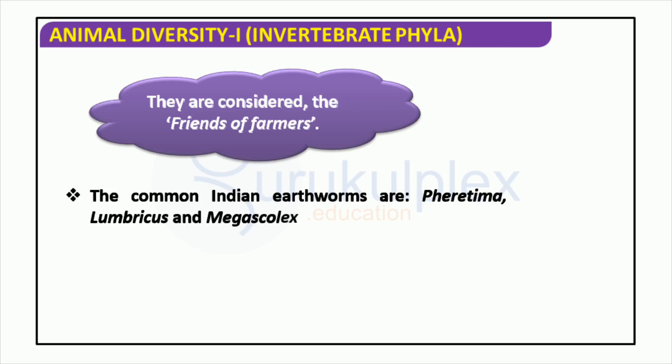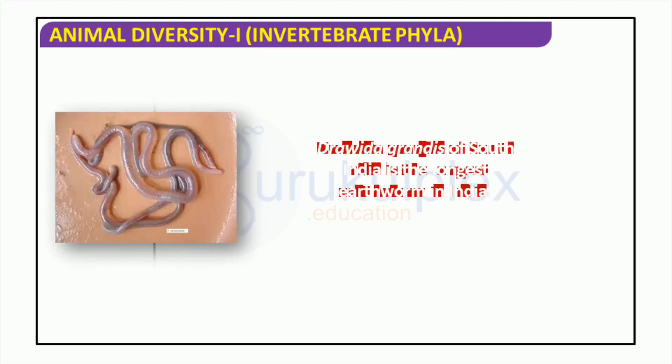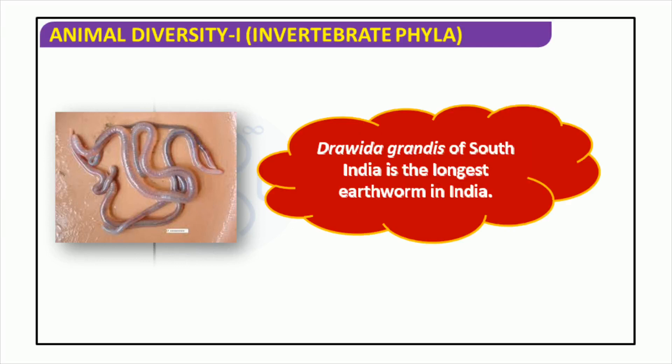Indian species such as Ferratima, Lumbricus, and Megascolex, which have been around since ancient times, are very beneficial to farmers. With their help, the fertility of farmland can be improved and the production of a healthy crop of plants can be sustained. Earthworms are incredibly beneficial to our planet, and Drahida Grandis from South India is the longest earthworm species in India, reaching up to 6 feet in length. It has a unique body structure which not only looks fascinating, but also aerates and fertilizes the soil, helping to nurture vegetation and sustain various ecosystems. We must make sure that we protect and preserve this species as it is key to maintaining the biodiversity of our planet.